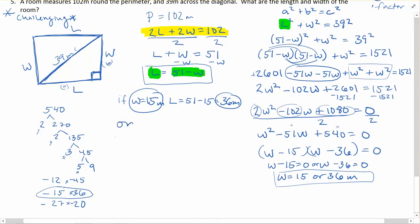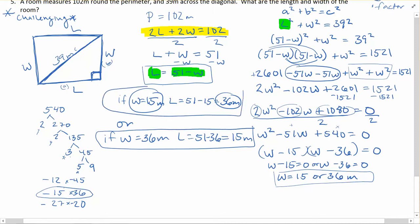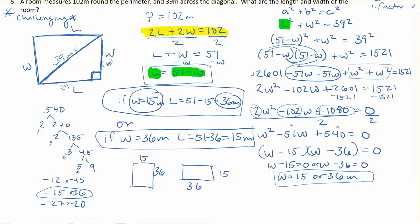Or I can have the other situation where if the width is equal to 36 meters, then the length is equal to 51 minus 36, which is equal to 15 meters. And those are kind of basically the same thing, so basically we'll get a box that's 15 by 36, or you get a box that's 15 by 36, just whether you want to call it the length or the width by those numbers. So again, it is a challenging problem here, but good to give it a go. See if you guys can do a few more of those practice problems on quadratics and context.